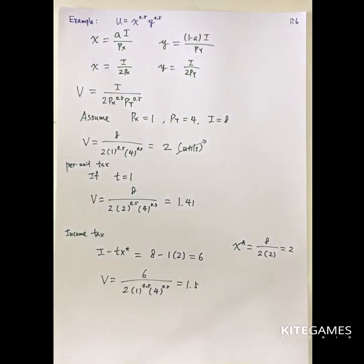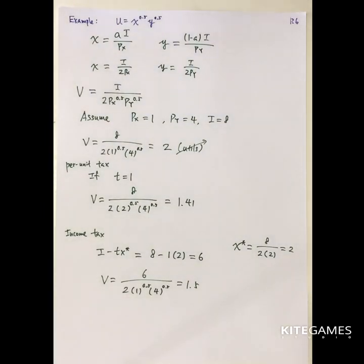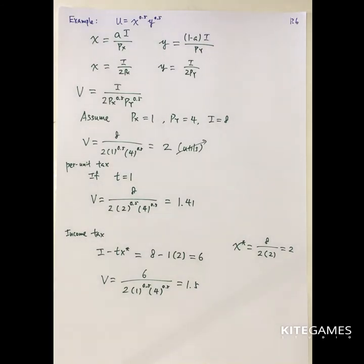Unless there is a perfect complement — because then you have to buy the same combination of x and y — the income tax is always preferred to the per unit tax from the perspective of a consumer, given that the tax amount is the same.